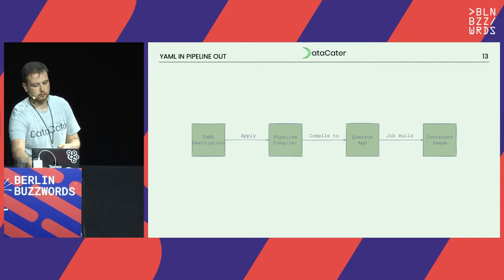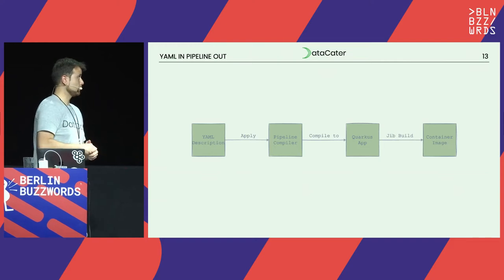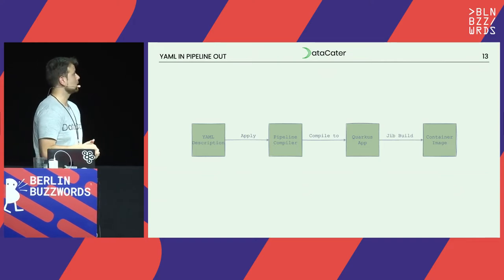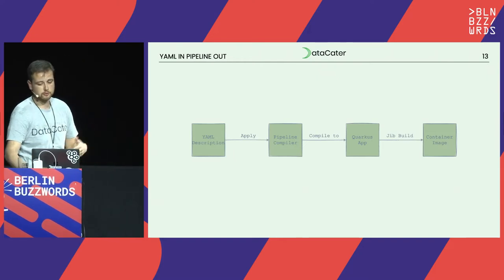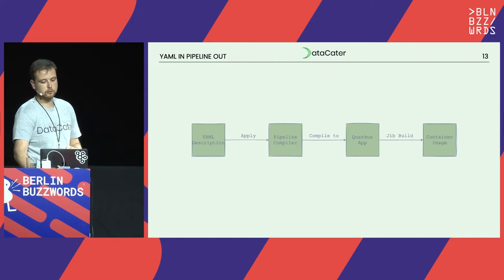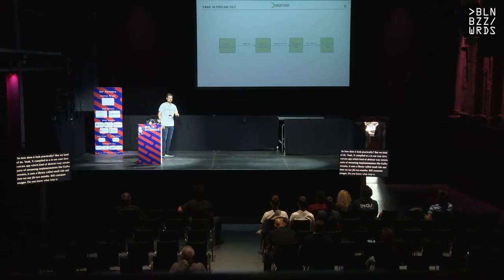How does it look practically? We do a YAML apply, compile to — in our case — a Java Quarkus app, which abstracts away certain parts of streaming implementations like Kafka Streams. It uses a library called SmallRye. Then we use Jib to build container images. Jib basically allows you, within Java code — it's a library written by the GCP folks — to build container images off a base image, essentially doing a Docker build within Java code without having a Docker daemon or anything like that. In practical terms, this YAML pipeline produces a Kafka topic going in, the data pipeline that falls out of this YAML, and a Kafka topic for writing out.